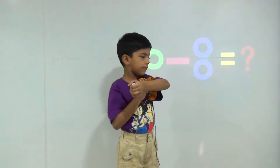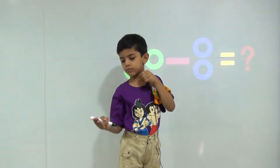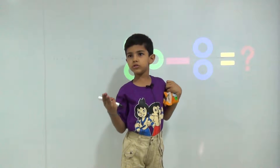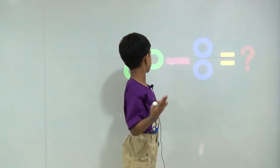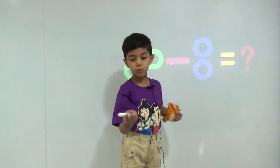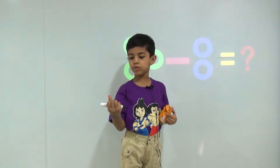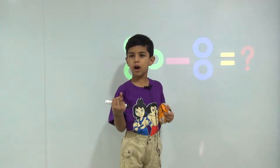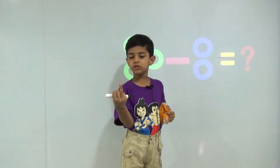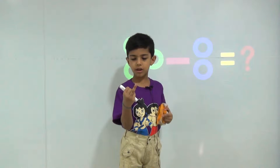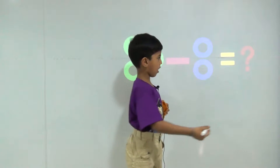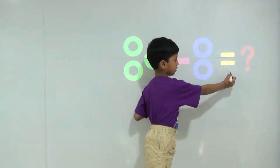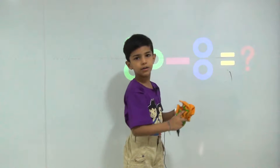I have three circles. My bhaiya takes two circles. So how many circles do I have? One. So the answer is one.